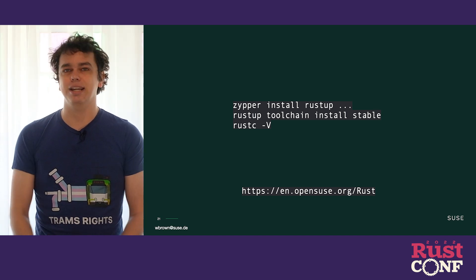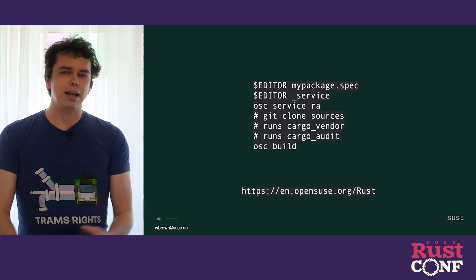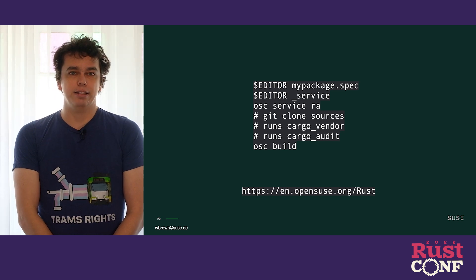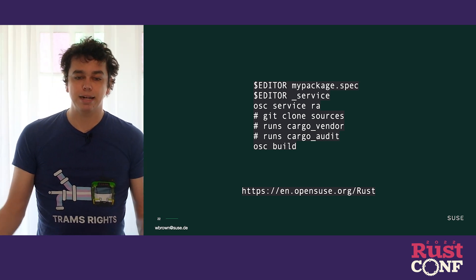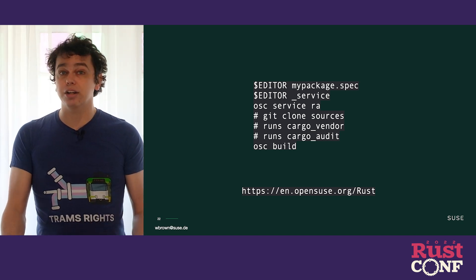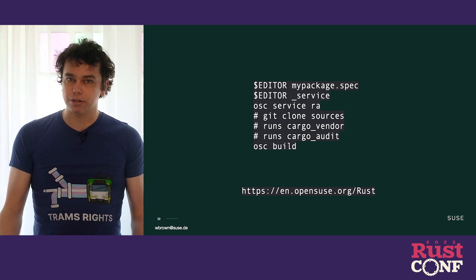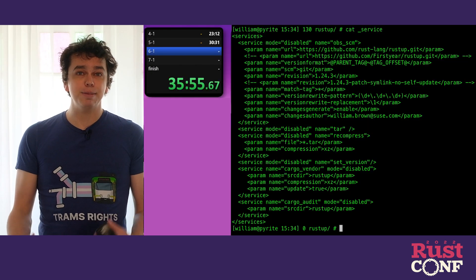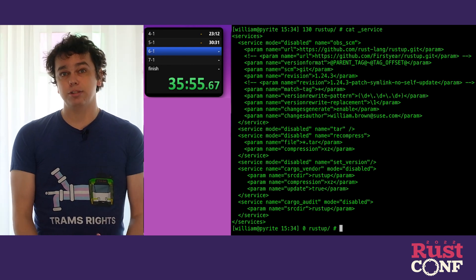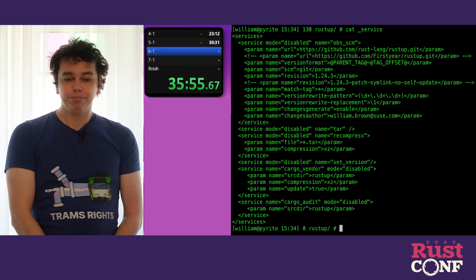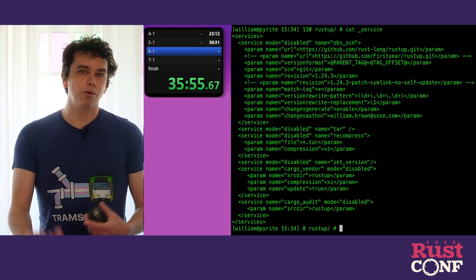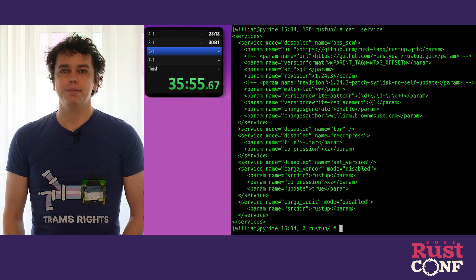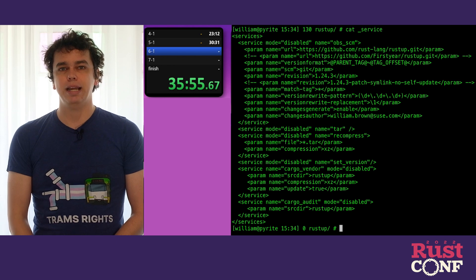Our package toolchains we consider to be part of a container build pipeline or for use by the distribution internally. What about being a packager? What does it look like if you wanted to contribute your application to a distribution like OpenSUSE? Now all you need to do is edit the spec file — what's used to generate the package — edit a metadata service file, and run the services. These services will automatically do the cargo vendor for you, run cargo audit, and bundle that all up into a vendor tarball. Then you can just build it. It's a very easy and approachable process, and you can go from nothing to a packaged Rust application for a distribution in less than an hour.